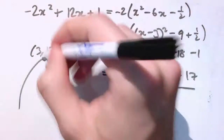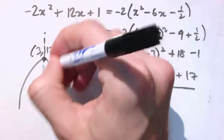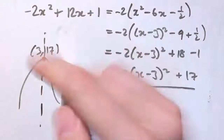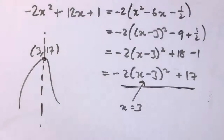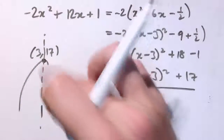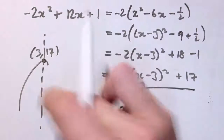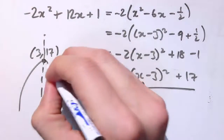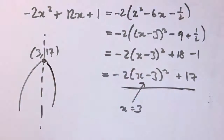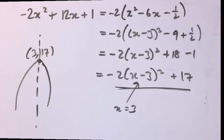Quadratics are symmetric about their maxima or minima. The completed square form is really nice — it allows us to very quickly see the minima and maxima, and it's a great way of understanding how quadratics work.